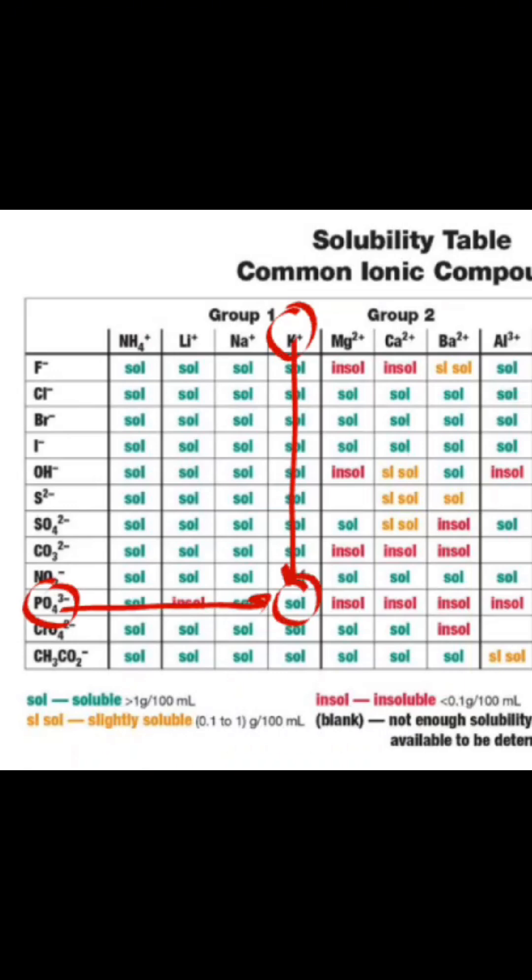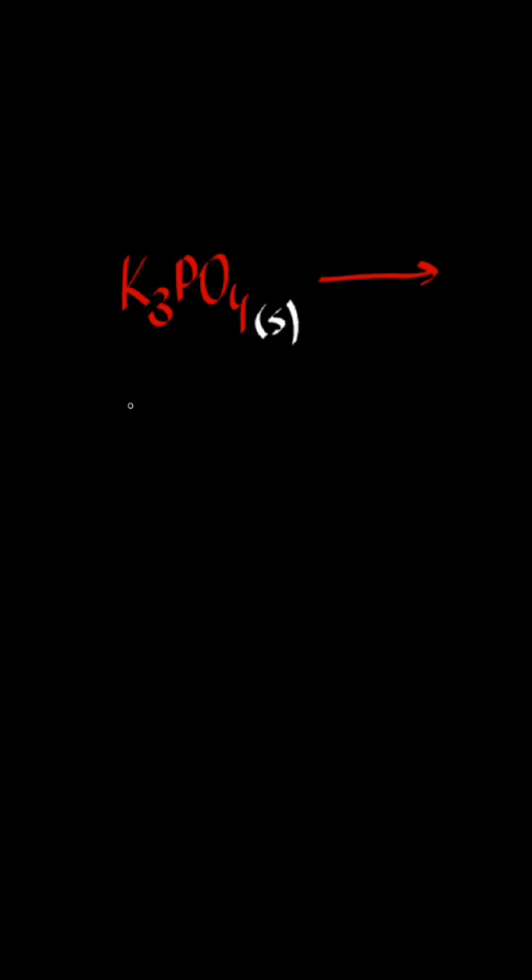so we know it will dissociate. To write the equation, first write the ions as products, then their charge. If you don't remember the charges, that's alright, you can always look at the solubility table.